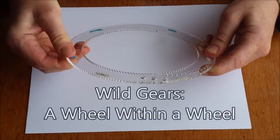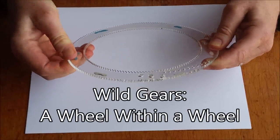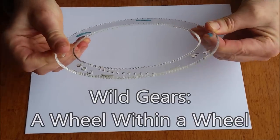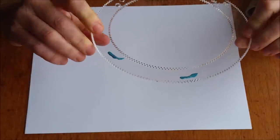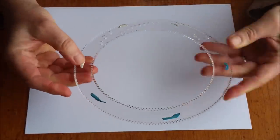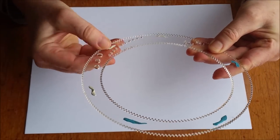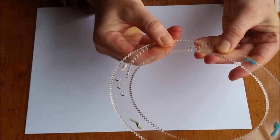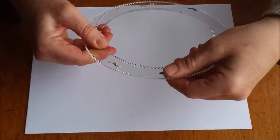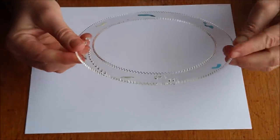All right, we're going to use Wild Gears here to do a wheel within a wheel, which is just about my favorite thing to do with Wild Gears. Now, I'm using Putty here. This is Poster Putty, Loctite or Post-it or Hold-it. It's got different names. It's the same as the Spirograph Putty, the Spiro-putty in the new versions of Spirograph.